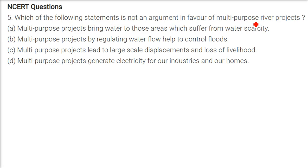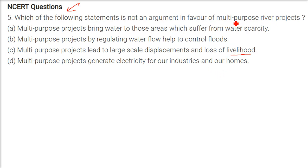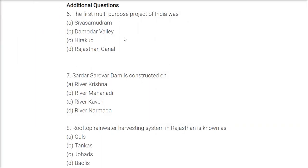Which of the following statements is not an argument in favor of multi-purpose river projects? This is in the NCERT book also. The answer is C: multi-purpose projects lead to large-scale displacement and loss of livelihood. This cannot be in favor — it is actually an argument against the making of multi-purpose river projects.